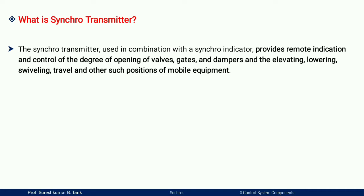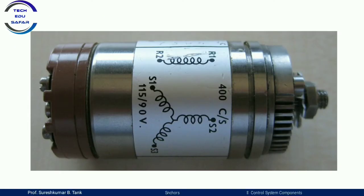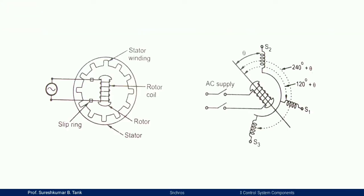What is the synchro transmitter? The synchro transmitter is used in combination with a synchro indicator to provide remote indication and control of the degree of opening of valves, gates, and dampers, and the elevating, lowering, slewing travel, and other such positions of mobile equipment. The simple construction shows 115–90 volt supply with S1, S2, S3 terminals and rotor terminals R1 and R2.